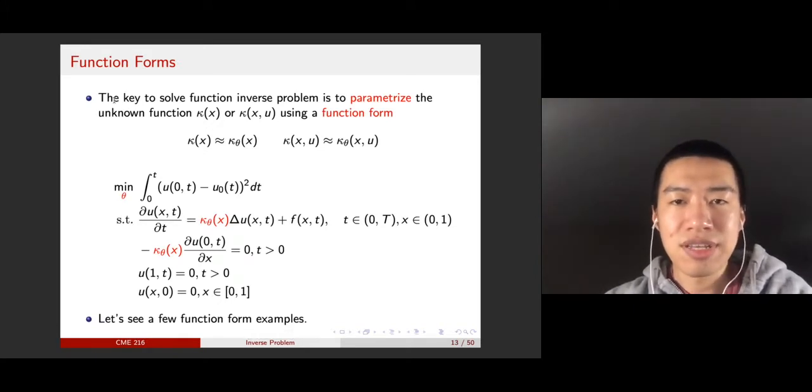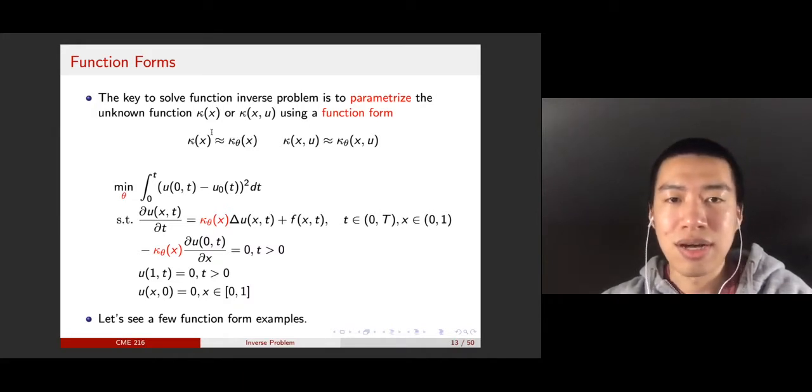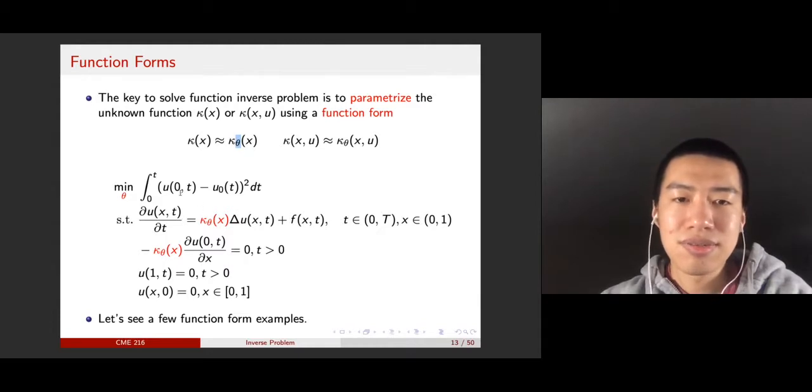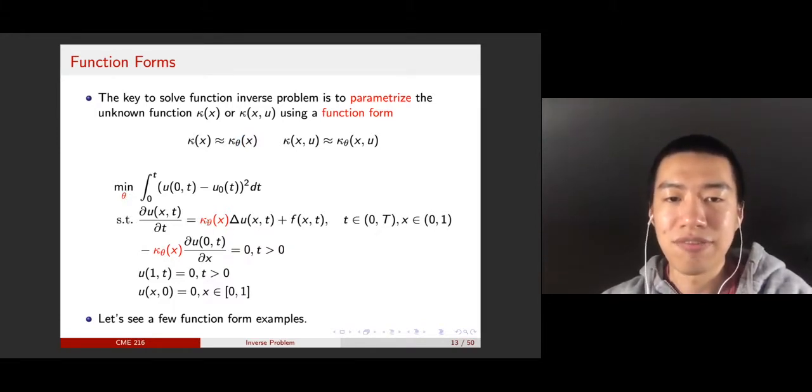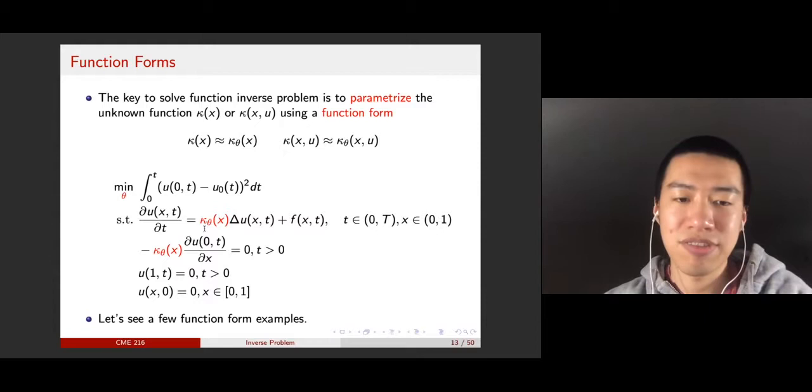As we mentioned, in the function inverse problems, you have an unknown function, kappa x or kappa x u, depending on whether you want your unknown function to be dependent on your state variables. And one idea to solve this kind of inverse problem is to parametrize your unknown function using a family of functions, where the parameter is theta. And so, you reduce your infinite dimensional problem to a finite dimensional problem, where you just want to estimate a parameter theta instead of a function, which is pretty abstract, and you will look for solutions in an infinite dimensional function space.